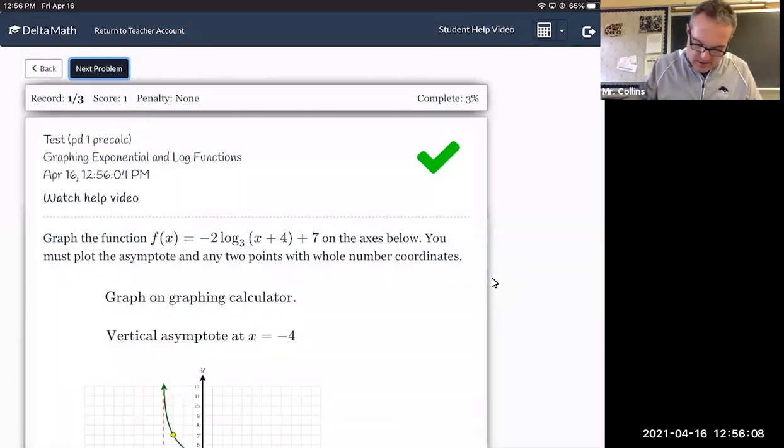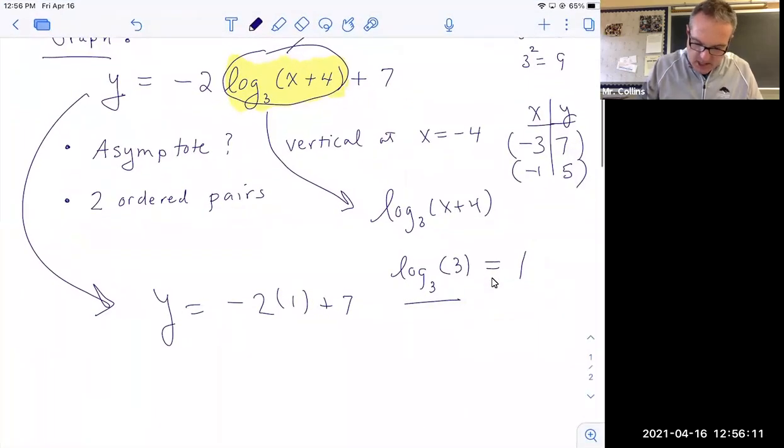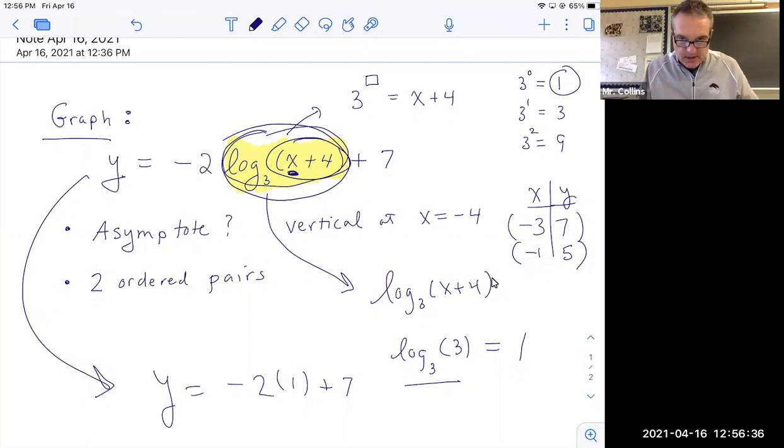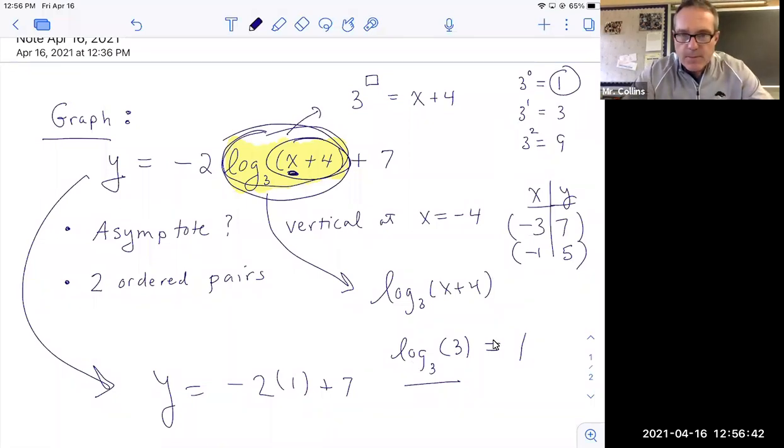But again, the key trick here is you need to pick x values in here that give you a decent y value. So you got to make sure your argument here becomes a power of three, either one, three or nine. So just so you know, another good value there would have been x equal five, because that would have given me a nine in there. Okay, guys, I hope that helped. I hope it makes sense to you. I'm going to stop my recording.